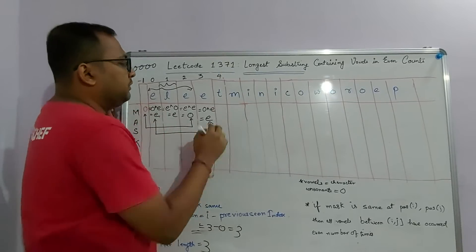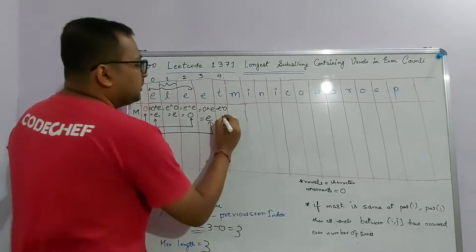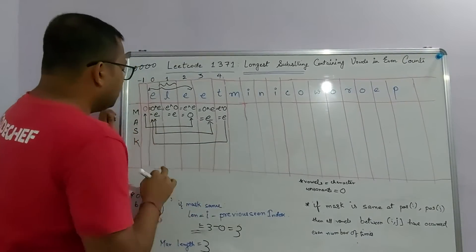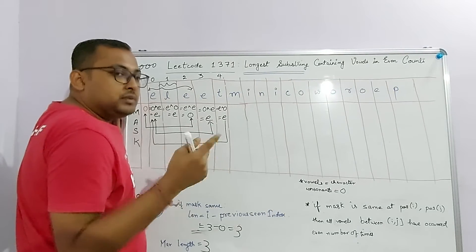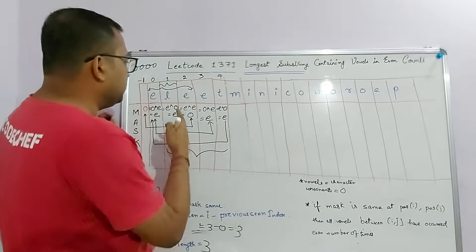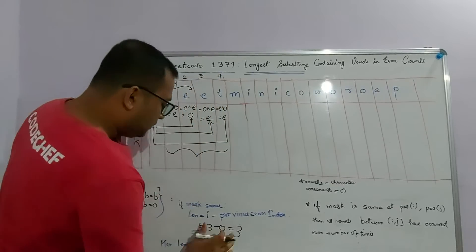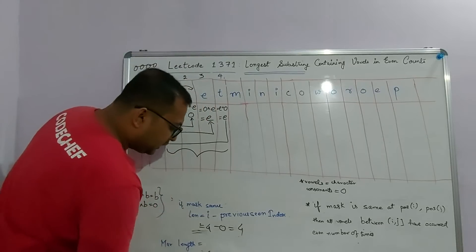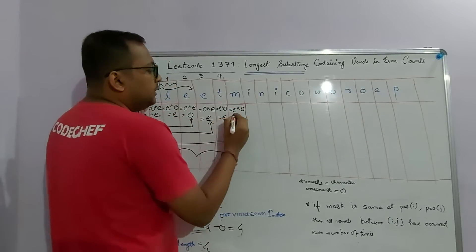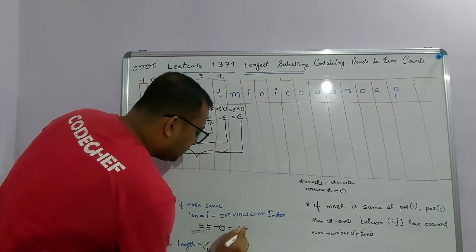At index 4 we have a consonant, so its value is 0. Previous mask was E, so E XOR 0 = E again. We've seen E before at position 0, so the length is 4 minus 0 = 4, which is better — our best answer becomes 4. At index 5 we again have a consonant. Previous mask E XOR 0 = E, giving length 5 minus 0 = 5. Best answer is now 5.